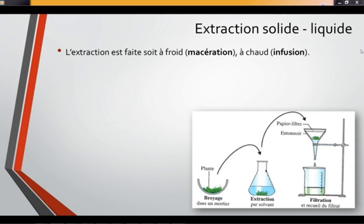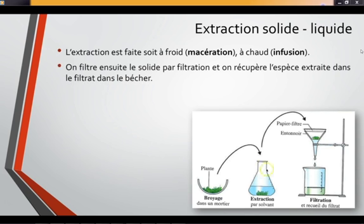On laisse infuser à chaud les feuilles de thé dans de l'eau, et la substance chimique extraite des feuilles se dissout dans le solvant. On broie les plantes dans un mortier et on les met dans le solvant. Le solvant est imprégné progressivement de l'espèce chimique. Ensuite, on filtre avec un papier filtre. Le solide reste dans le filtre, et dans le bécher on récupère le filtrat. C'est exactement la même chose pour le café.